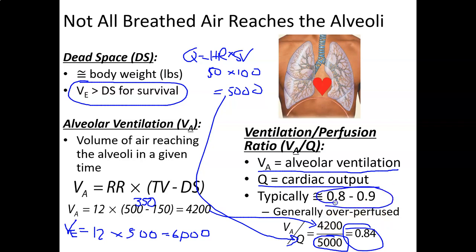In most people, the VAQ ratio is about 0.8 to 0.9, which tells us that our lungs are generally over-perfused — meaning we have more blood than air. If your VAQ ratio was above 0.9, or even 1.1, or below 0.5, it would tell you something about the problem you have. For example, if your VAQ was 1.2 — really high — it would suggest something wrong with perfusion, like a heart problem where not enough blood gets to the lungs, leading to poor gas exchange.